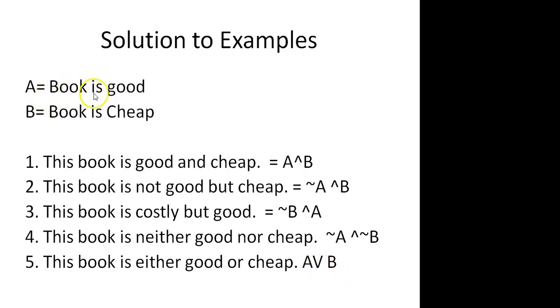We can see here we have represented book is good by A and book is cheap by B, and we have solved all the examples.